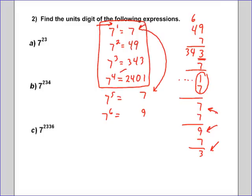And then if you divide by 4 and you get no remainder, that means it's divisible by 4, then your units digit is 1. And that would make more sense if you considered 7 to 0 is going to be 1. And so you can see that pattern happening over and over again.